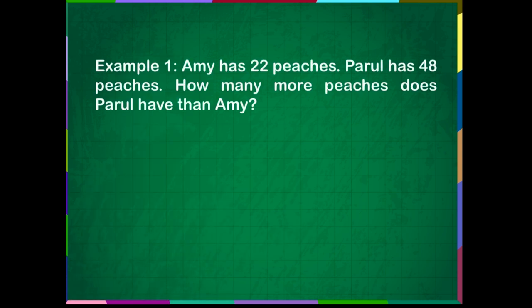Example 1. Ami has 22 peaches. Parul has 48 peaches. How many more peaches does Parul have than Ami? We have to subtract Ami's peaches from Parul's peaches to find the answer.